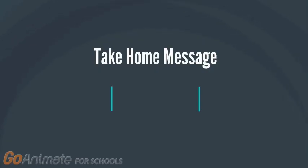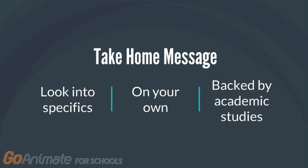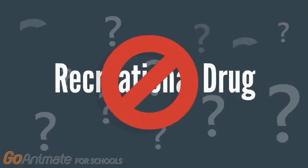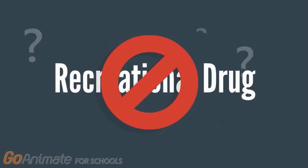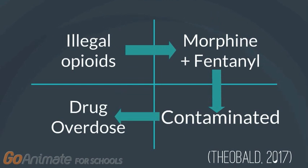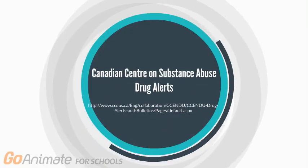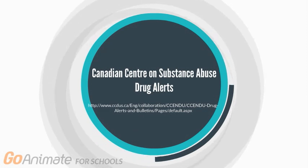Overall, the take-home message is that it is important to look at the specifics of what is being said in media. If a claim seems too good or too flamboyant to be true, look into the claims on your own — they should be backed by academic studies. To conclude, carfentanil is not being intentionally used for consumption as a recreational drug. The RCMP says that illegal opioids such as morphine and fentanyl are actually contaminated with carfentanil, which can cause a drug overdose, because these illegal drugs are not tested during manufacturing and may be laced through contamination. For more information, see the Canadian Centre on Substance Abuse drug alerts website.